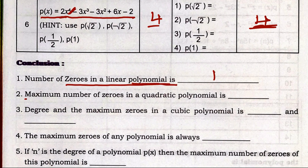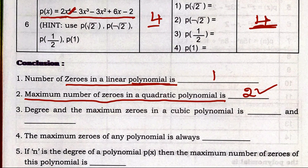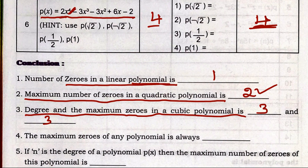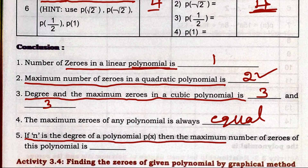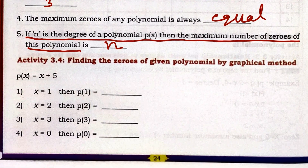Conclusion: The maximum number of zeros of a linear polynomial is 1. For a quadratic polynomial (degree 2), maximum zeros is 2. For a cubic polynomial (degree 3), maximum zeros is 3. In general, if n is the degree of polynomial p(x), then the maximum number of zeros is n.